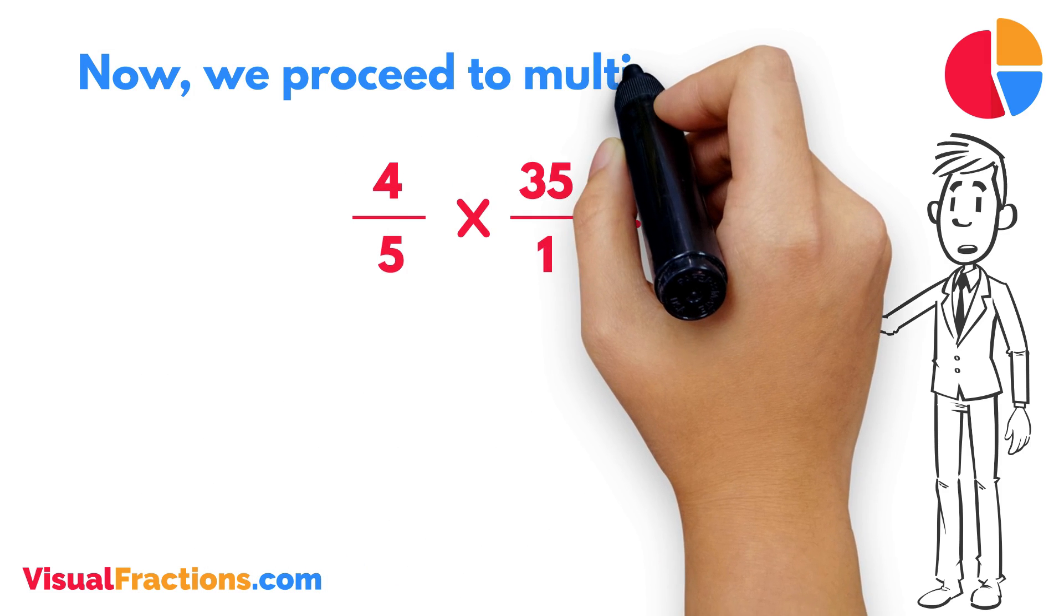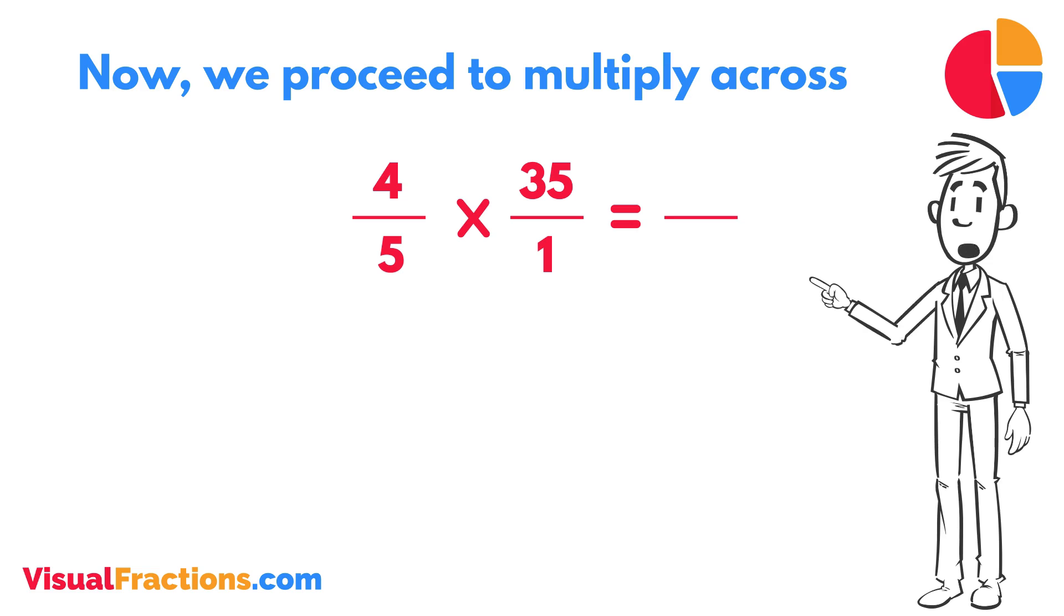Now, we proceed to multiply across. First, multiply the numerators, 4 times 35 equals 140.